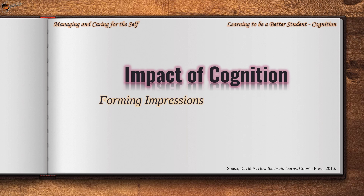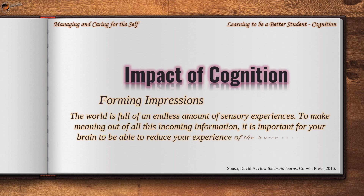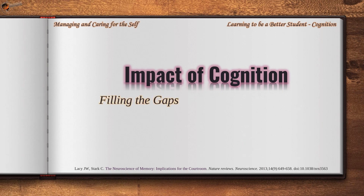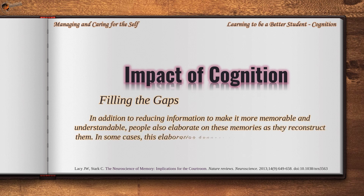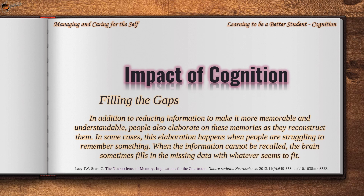The world is full of an endless amount of sensory experiences. You cannot remember everything, so events are reduced down to the critical concepts and ideas that you need. In addition to reducing information to make it more memorable and understandable, people also elaborate on these memories as they reconstruct them. When information cannot be recalled, the brain sometimes fills in the missing data with whatever seems to fit.